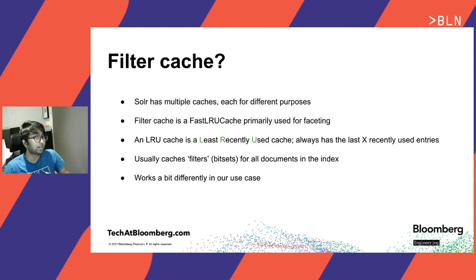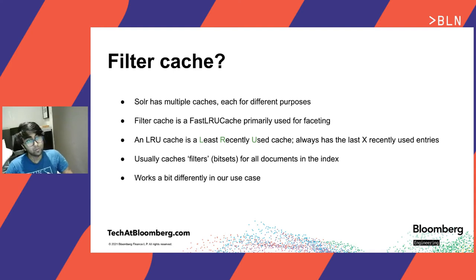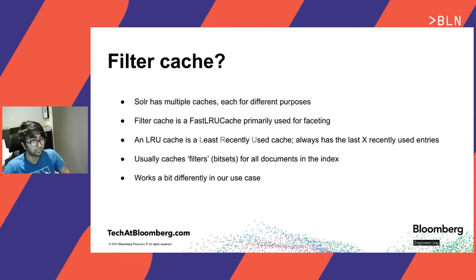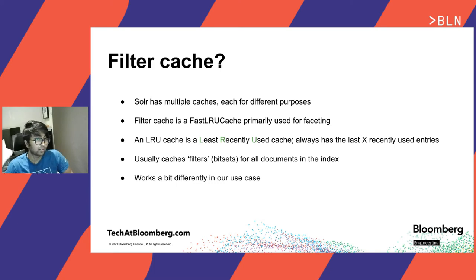Before going deeper, it's important to understand what a filter cache is. Solr has many different caches serving different purposes. Filter cache is one such cache typically used for storing filters used in the FQ part of the query — the filter query. It is also extensively leveraged in faceting when using the default facet method, which is FC. In essence, it's a fast LRU cache which stores the last X recently used entries. The filter cache stores filters or bit sets — if a Solr index has 1000 documents, each bit set has a length of 1000 with matching documents marked as one and everything else as zero. These bit sets are a compressed way to represent documents matching a certain query.